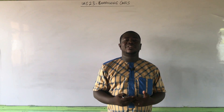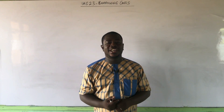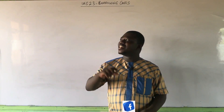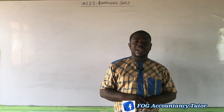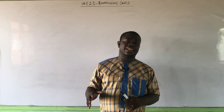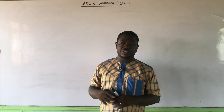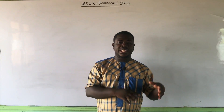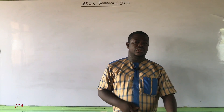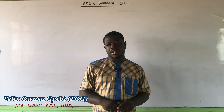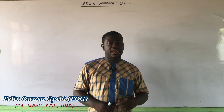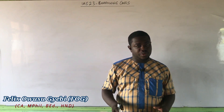Good day. Welcome to another session of Fog Accountancy Tutorials. Today we are continuing our lesson on borrowing costs, looking at part 2. In our previous video, we ended with the components of borrowing costs, trying to explain and understand what goes into borrowing costs. Today we are going to look at the concept of qualifying assets and then looking at when to capitalize, and the commencement and the cessation provisions.